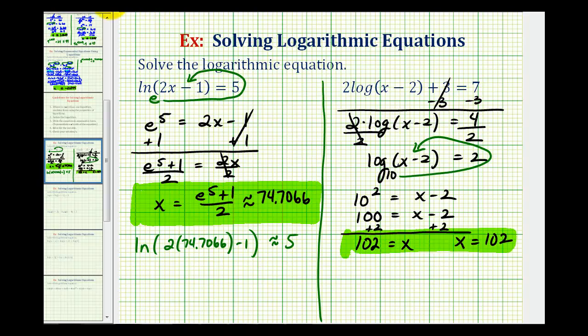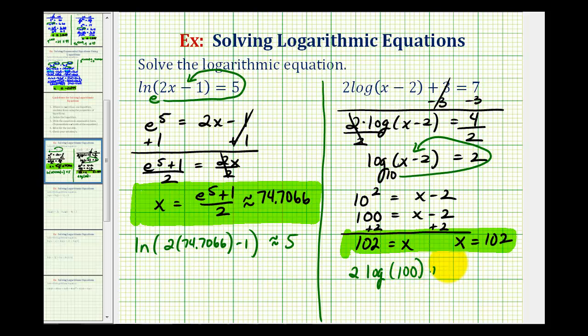Let's go ahead and check this. We'll substitute 102 into the original equation. So we'd have two common log, 102 minus two would be 100, plus three equals seven. Well, the common log of 100 is equal to two, since 10 to the second is equal to 100. So this would be two times two plus three equals seven, and that does equal seven.